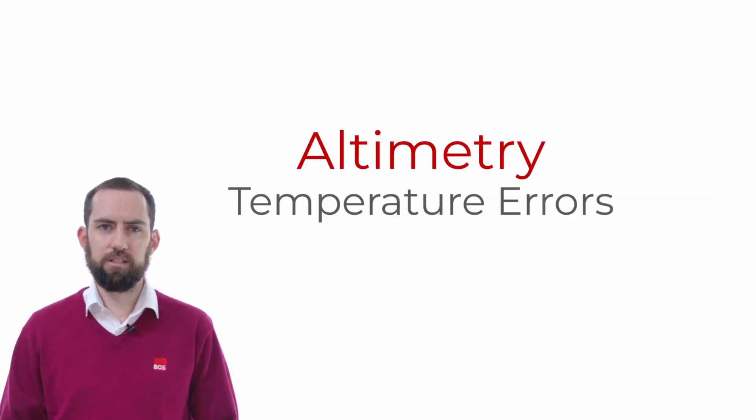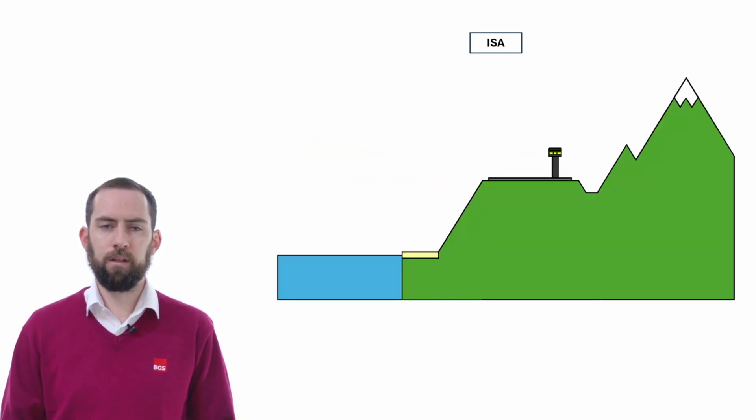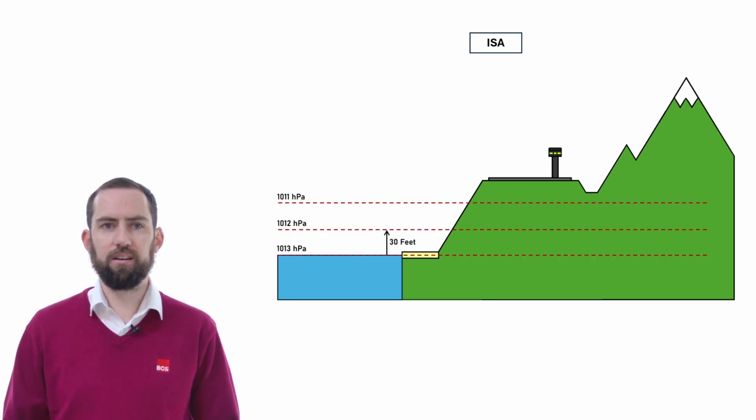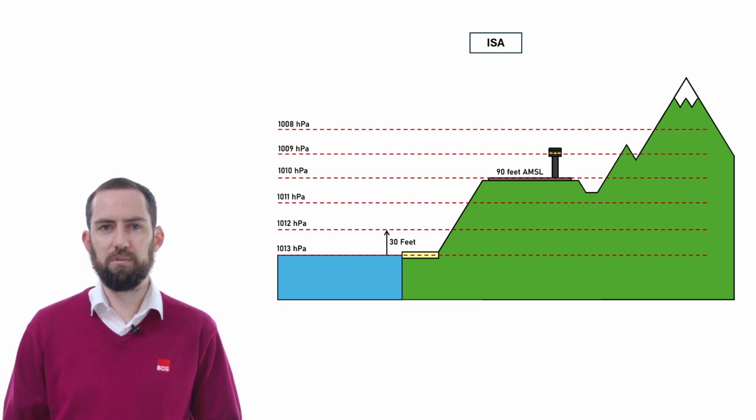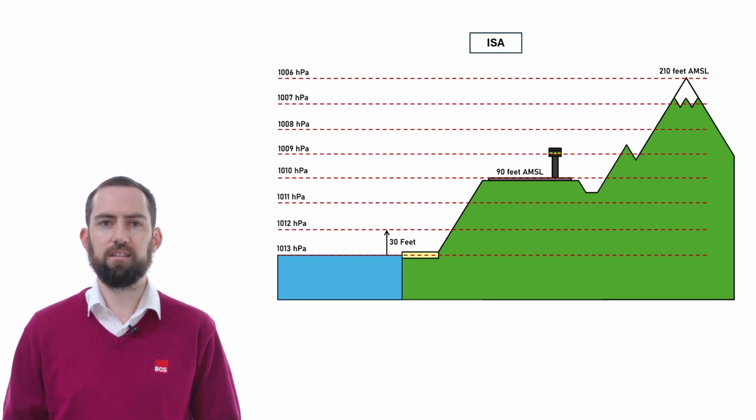Let's move on to temperature errors. Going back to our ISA atmosphere, we had our pressure planes layered out 30 feet apart, and we now understand that our altimeter is prone to misread on account of non-standard pressures. It is also prone to misread on account of non-standard temperatures. What a non-standard temperature profile does is change the pressure lapse rate so that the pressure falls off faster or slower than the ISA lapse rate, depending on if the air is warm or cold.